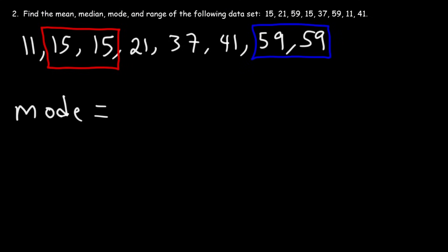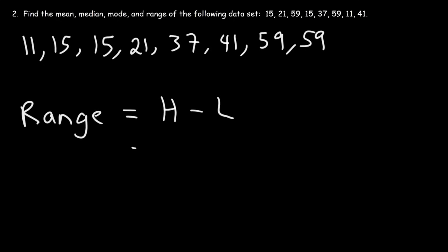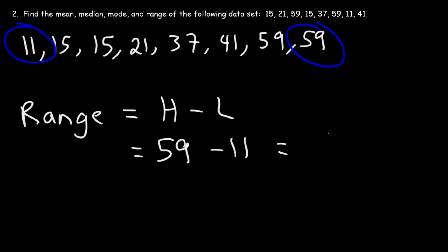Now what about the range? There's nothing different about the range here compared to the last problem. It's simply the highest number minus the lowest number — H minus L. The highest number is 59 and the lowest is 11, so 59 minus 11 is 48. Now you know how to find the mean, median, mode, and range of a data set.